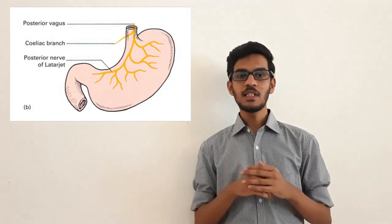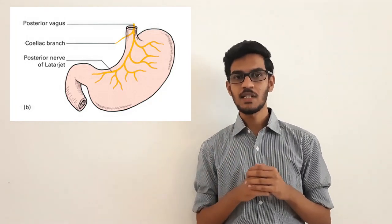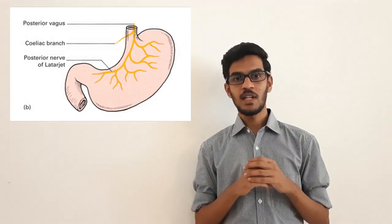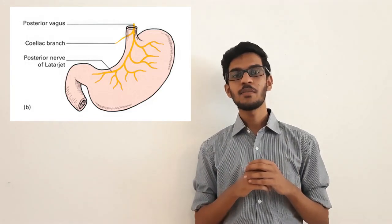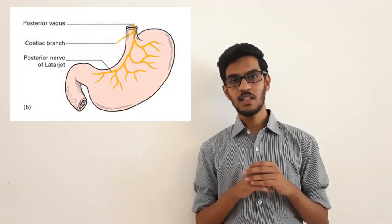The posterior vagal trunk mainly consists of right vagal fibers. It gives a celiac branch and also gives gastric branches to fundus and body. The posterior nerve of latarjet only supplies to the pyloric antrum and not to the pyloric sphincter. It is important to know that only the anterior vagal trunk supplies to the pyloric sphincter.